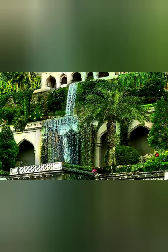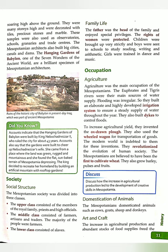Now, social structure. The Mesopotamian society was divided into three classes. The upper class consisted of members of the royal family, priests — persons who performed sacred or religious duties — and high officials.